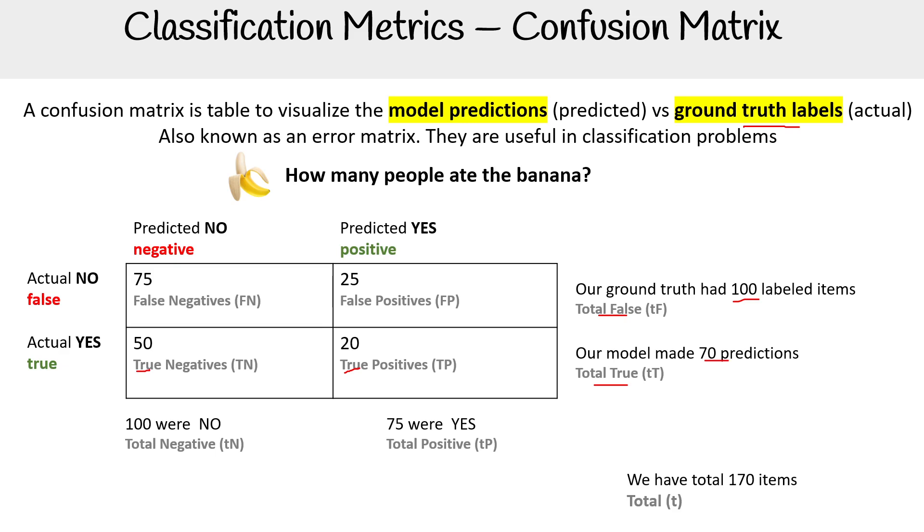Now, I just want to point out that for the most part, these are what the initialisms are when you're looking at confusion matrix, but there are more initialisms and sometimes there are variants here. So just understand that will change. And remember that this confusion matrix is going to change in size based on what you're testing.